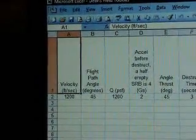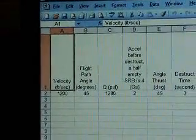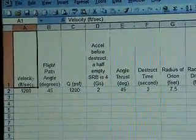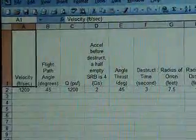I'll just read the parameters we're using here initially. Initial velocity is 1,200 feet per second, 45-degree flight path angle. We have an ARES-1 type, max dynamic pressure Q, 1,200 PSF.